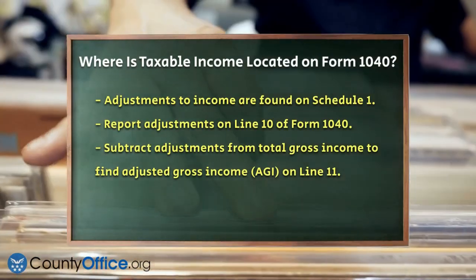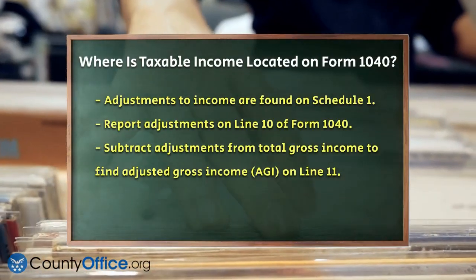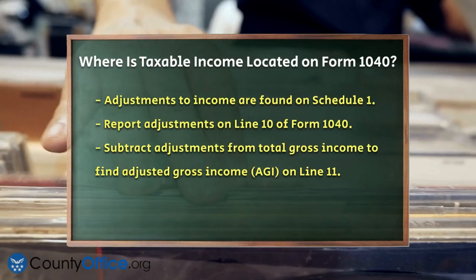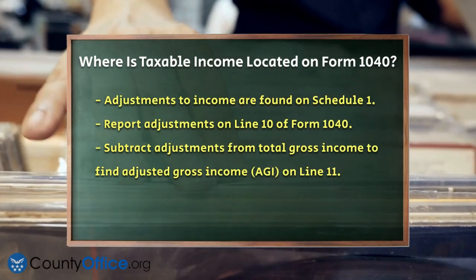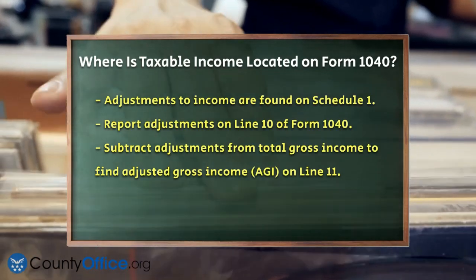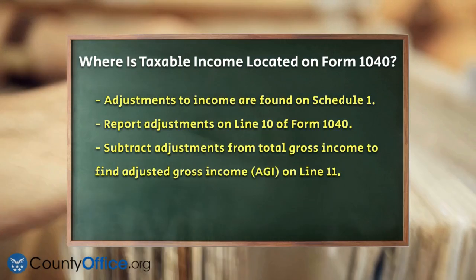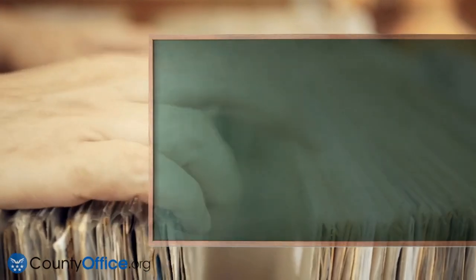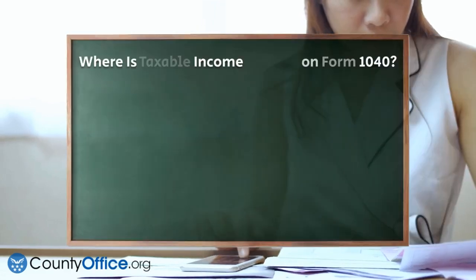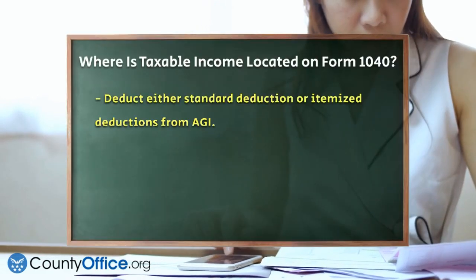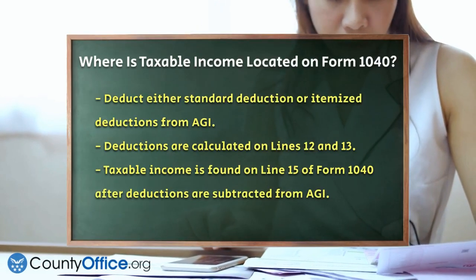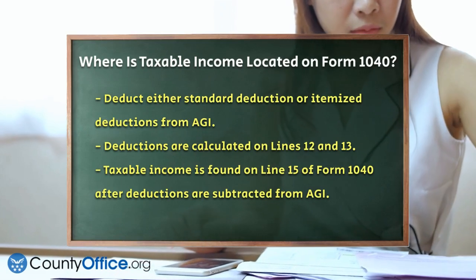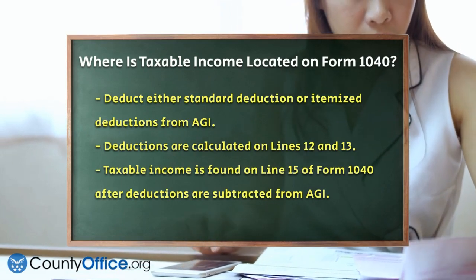Here's the important part. To get to your taxable income, you'll subtract your standard deduction or itemized deductions from your adjusted gross income. This is calculated on Lines 12 and 13. After adding these deductions together and subtracting them from your adjusted gross income, you'll find your taxable income on Line 15 of Form 1040.